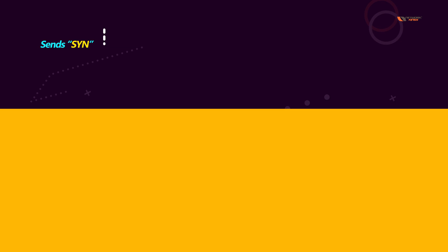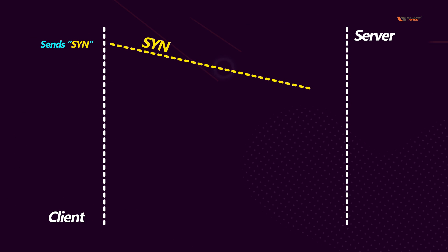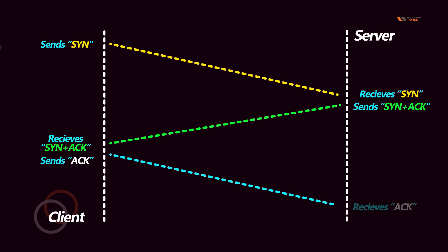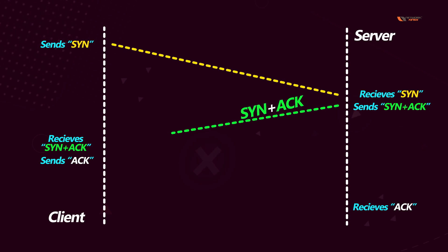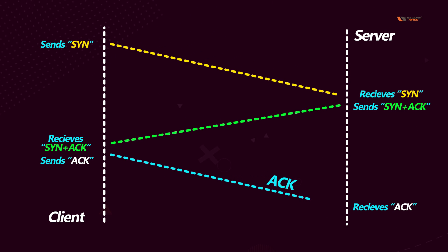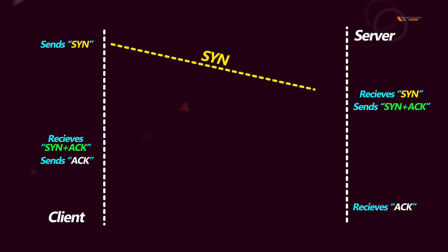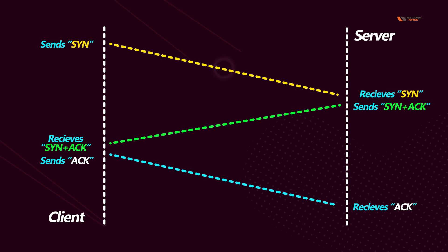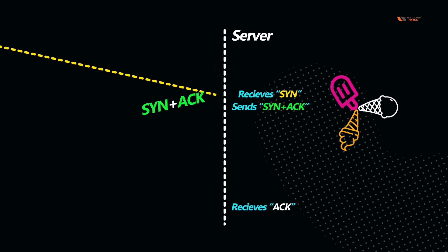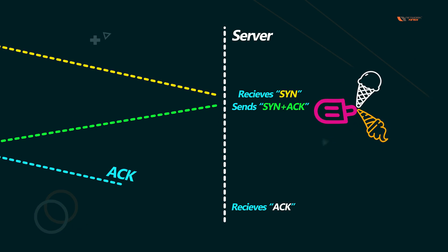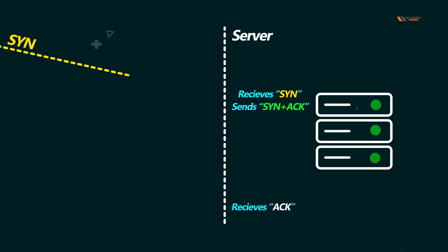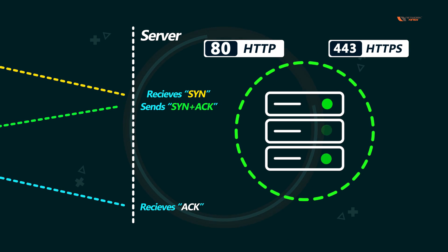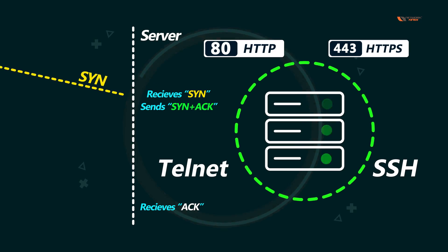The server responds back with a SYN-ACK segment. In the ACK part, the server acknowledges the message sent by the client. In the SYN part, the server describes the kind of services it is providing — for example, like an ice cream parlor describing their flavors and prices. In a real-world scenario, a server would explain services such as HTTP on port 80, HTTPS on port 443, SSH, Telnet, and many others.